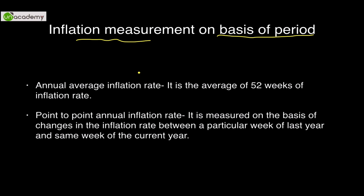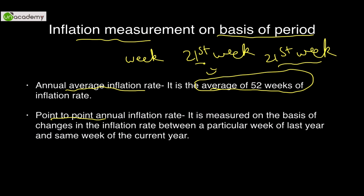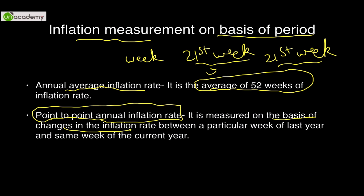Inflation measurement is done on the basis of some period — either on an annual basis, averaging 52 weeks, or point-to-point. For example, the 21st week of this year is compared to the 21st week of last year. This point-to-point annual inflation rate calculation measures the change in inflation rate between a particular week of last year and the same week of the current year.